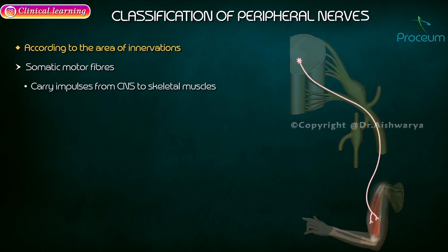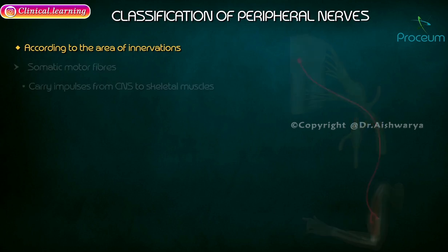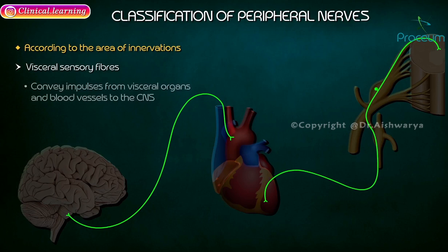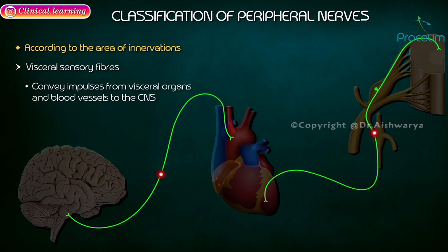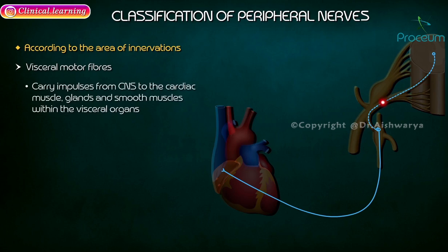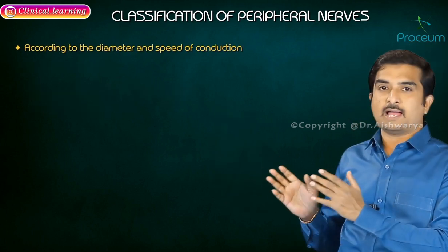Somatic motor fibers carry impulses from the CNS to the skeletal muscles. The visceral sensory fibers convey impulses from the visceral organs as well as blood vessels to the central nervous system. Visceral motor fibers carry impulses from the CNS to the cardiac muscles, glands, and smooth muscles within the visceral organs.